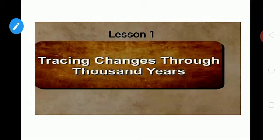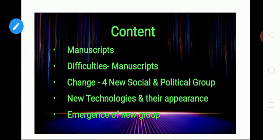In the third change, we saw about the sources of historians, like coins, inscriptions, manuscripts, tombs, chronicles, etc. And today we are going to see about manuscripts, difficulties in manuscripts, change for new social and political groups, new technologies and their appearance, and the emergence of new groups.